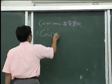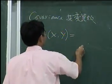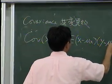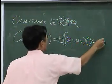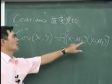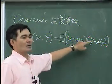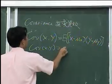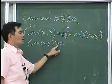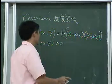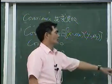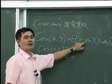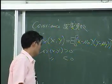The covariance formula is: Cov(X, Y) equals expectation of (X minus mu X) times (Y minus mu Y). If Cov(X, Y) is greater than zero, they are positively related. If it is less than zero, they are negatively related. Now we want to simplify this formula.